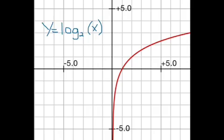Here's a graph of the log base 2. Notice some of the key things: it approaches the y-axis but it never actually reaches it, so our vertical asymptote is at 0. That's our y-axis, so we never quite reach 0. There's a key point at 1,0 where it crosses, and then another key point at 2,1 because the log base 2 of 2 is 1 — 2 to the first power equals 2. Those are just some key points for the parent function.